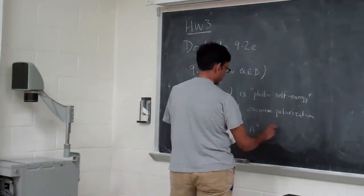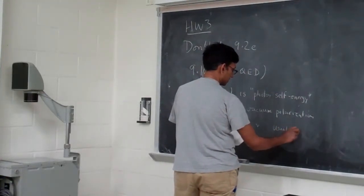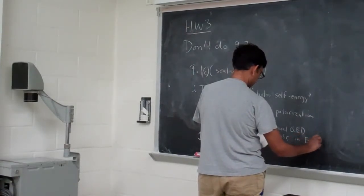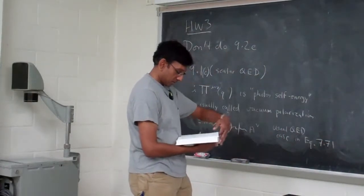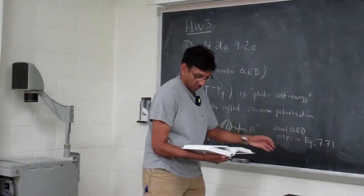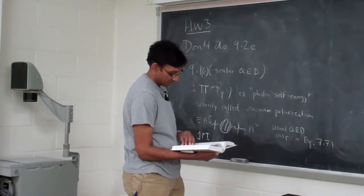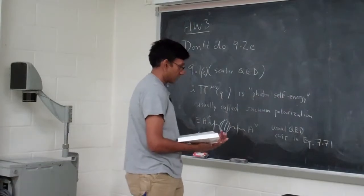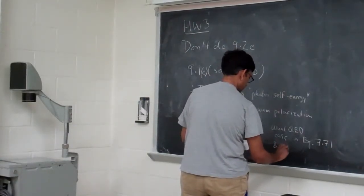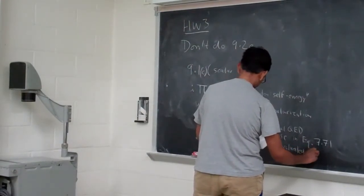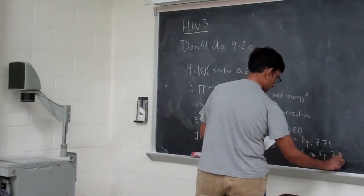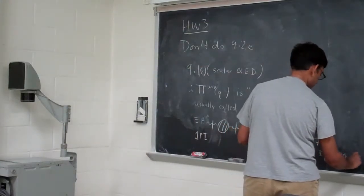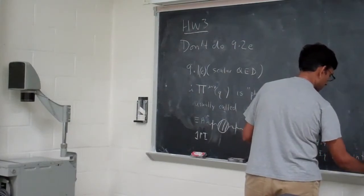The usual QED case is in equation 7.71, and is ultimately evaluated — I don't want you to do the standard QED one, but you're asked to make a numerical comparison — so just do the case you're supposed to do. It's evaluated in equation 7.90, in terms of scalar.